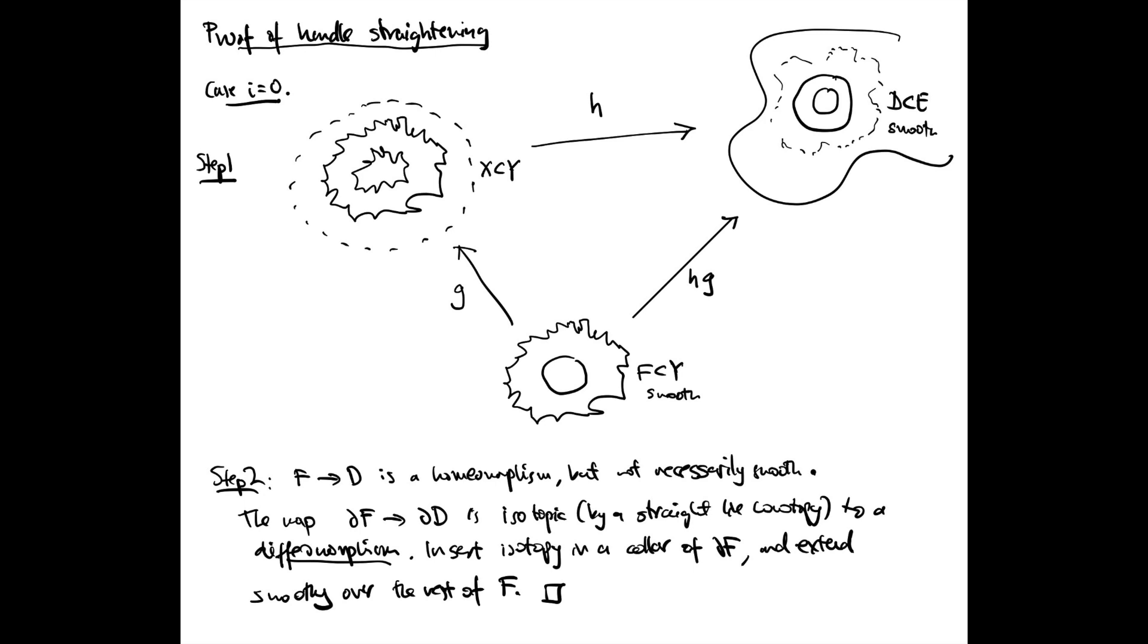Now, we're not quite finished. The map from F to D is a map from a smooth ball to a smooth ball, but we don't know that the map itself is smooth. It's just a homeomorphism. On the other hand, the map on the boundaries, well, that's a homeomorphism between smooth circles. And so any such map is isotopic, actually by a straight line homotopy, to a diffeomorphism. So we can insert this isotopy in a collar neighborhood of the boundary of F on the interior and extend it smoothly over the rest of F, so that the resulting map extends the map G on the complement of F, which then extends H on the complement of Y. And in the interior of F, well, it's not necessarily smooth at the boundary, but it's smooth outside a collar neighborhood of the boundary, so it's smooth somewhere. That concludes the proof of handle straightening in the case of a zero handle.